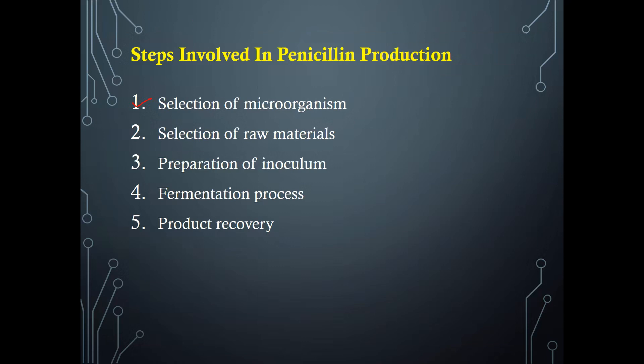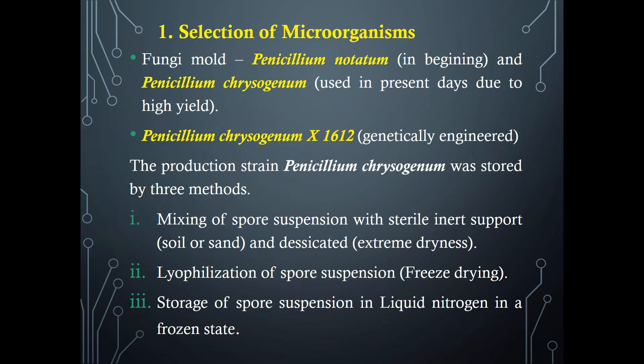Let's see each step in detail. The first step is selection of microorganisms. Penicillin is obtained from the fungal mold Penicillium species. In earlier days Penicillium notatum was used; nowadays Penicillium chrysogenum is used for its high yield. For industrial production, the Penicillium chrysogenum X1612 strain, which is a genetically engineered strain, is used.